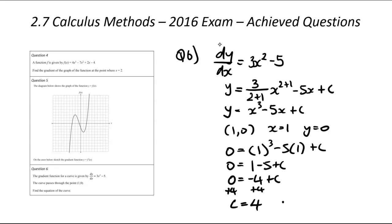That's our c value. Don't forget to state the final equation because that's what the question was. So we know that y is going to be equal to x cubed minus 5x plus 4.